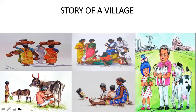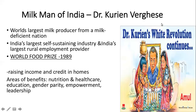Who is this global learner? He is none other than Dr. Kurian Varghese, also known as the milkman of India. He created India as the world's largest milk producer from being a nation deficient in milk supply. He created India's largest self-sustaining industry and India's largest rural employment provider. Both men and women were given equal opportunities to work, resolving gender disparity. This model was so successful that many nations implemented his scheme, known as the Anand Scheme — India's first cooperative scheme. He was awarded the World Food Prize in 1989.